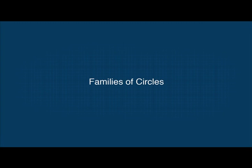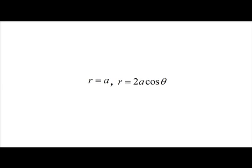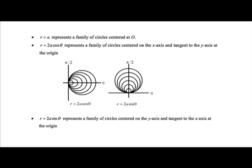We now consider families of circles. In the above examples, we have seen that r is equal to a, r is equal to 2a·cosθ, and r is equal to 2a·sinθ all represent circles where a is a constant. If we treat a greater than 0 as a variable, then r is equal to a represents a family of circles centered at O, and r is equal to 2a·cosθ represents a family of circles centered on the x-axis and tangent to the y-axis at the origin.